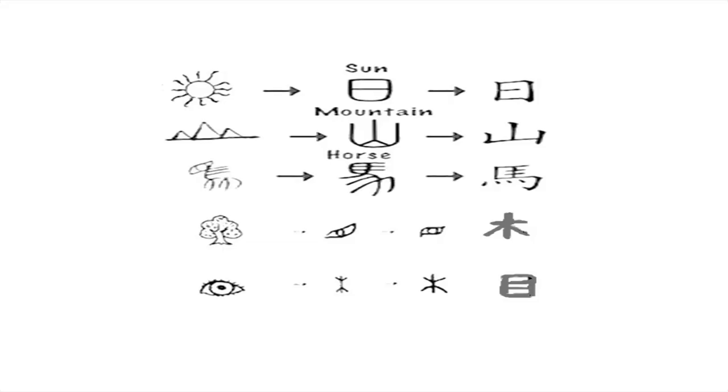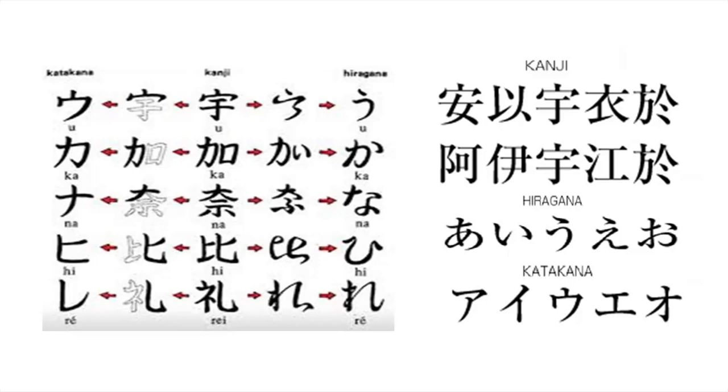The Japanese realized that these pictograms were a kind of script they could use for documenting, and slowly over a period of time, with the help of these pictograms which entered Japan via trade, hiragana came into being. Hiragana is a script used for words of Japanese origin.